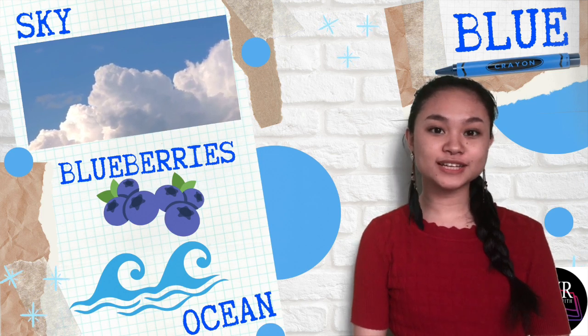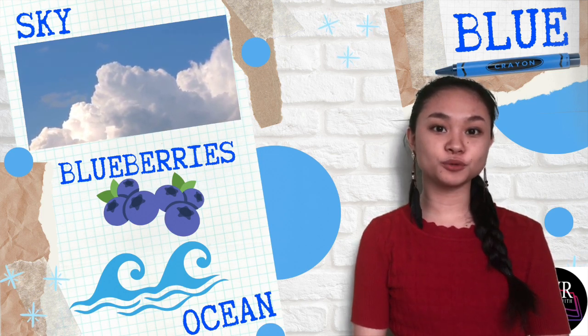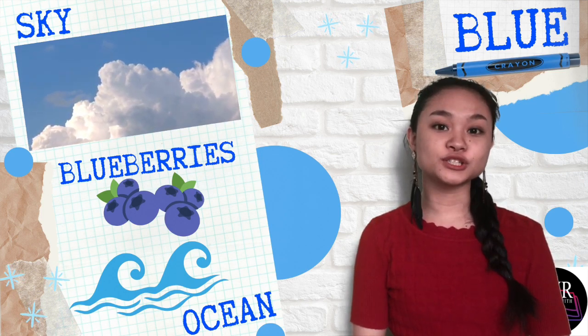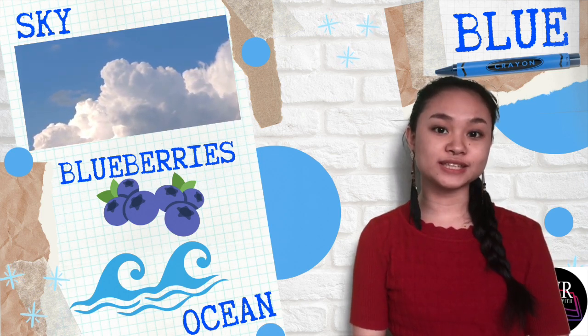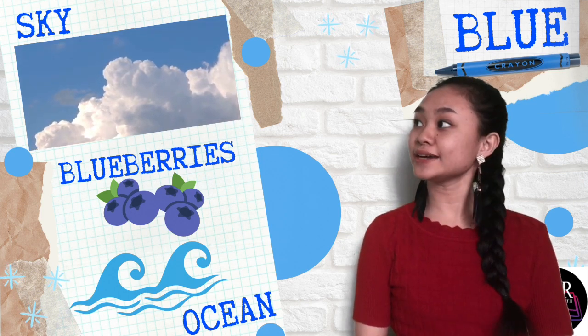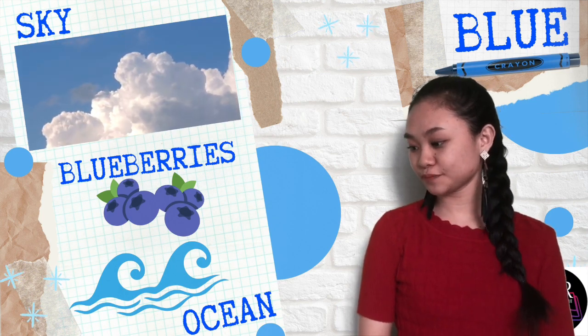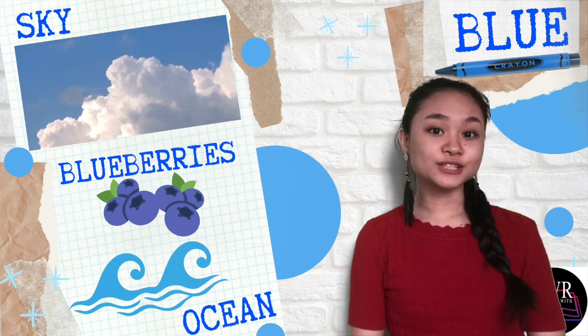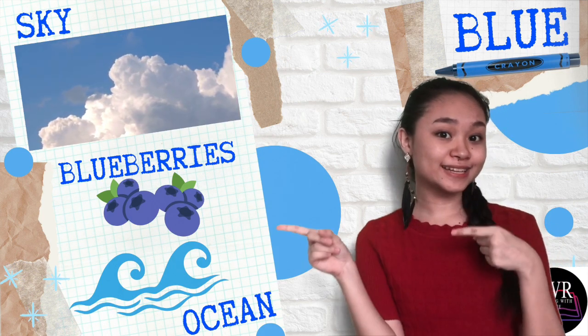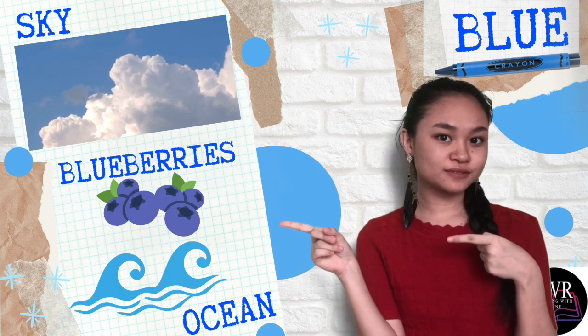Last but not the least is the color blue, which is dominant when you see the sky, the blueberries, and the ocean. Let's go on to the secondary colors.